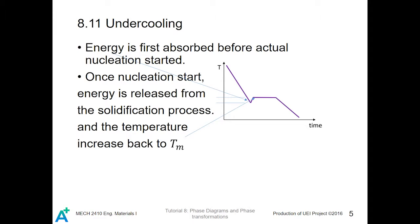Using the above discussion, we can explain the phenomenon of undercooling in the physical world. For example, in the solidification of water, energy is first absorbed before actual nucleation starts. That means water will first go below zero degrees before ice can actually form, because the water needs to absorb the critical free energy required to start nucleation. Once nucleation starts, energy is released from the solidification process and temperature increases back to the melting point, as shown in the picture here.